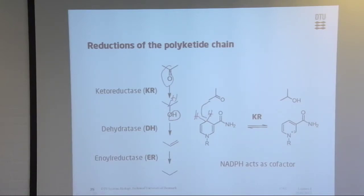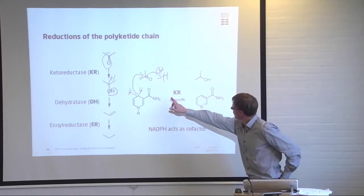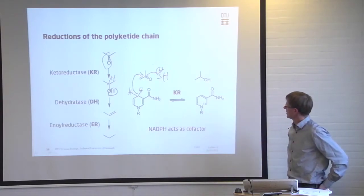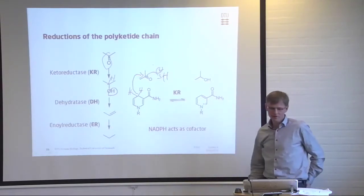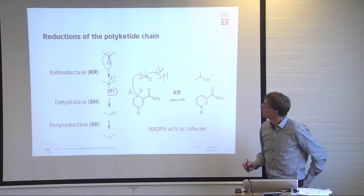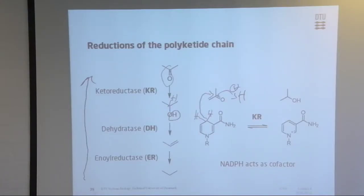One proton can be added to this position here, and then we have another proton. In this way we have formed the alcohol group. As part of the ketoreductase activity, we have formation of NADP. And this can go both ways - if we have the reaction in the other direction, we have oxidation going on.